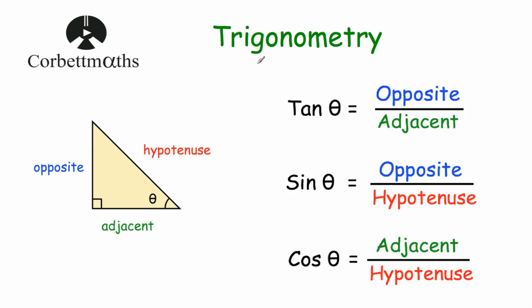Welcome to this CorbinMaths video. In this video we're going to look at trigonometry and using it to find the lengths of sides of a right-angle triangle. If we've got a right-angle triangle and we know one of the sides and an angle, we can use trigonometry to find the length of one of the other sides. Before you watch this video, I'd highly recommend you go to CorbinMaths.com and watch the introduction to trigonometry video, where I go through how to label the sides of a right-angle triangle and the trigonometric ratios.